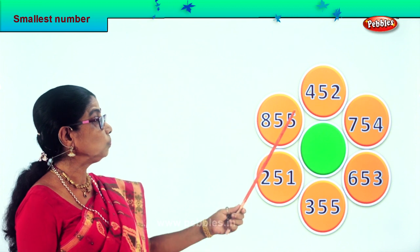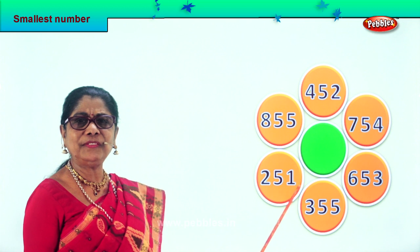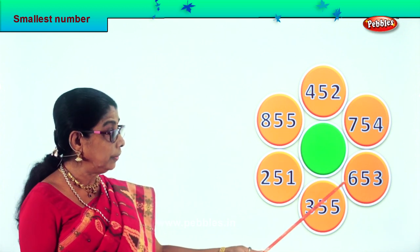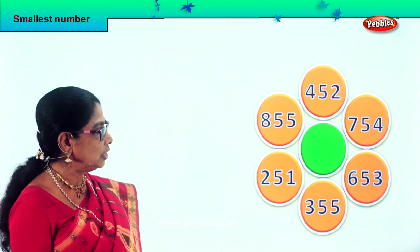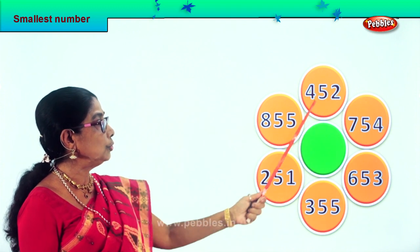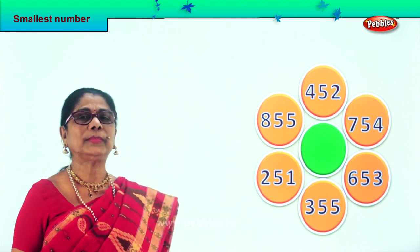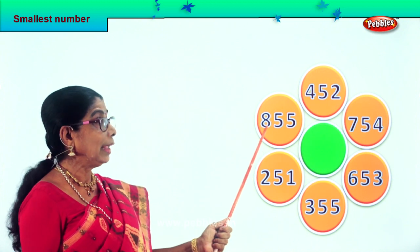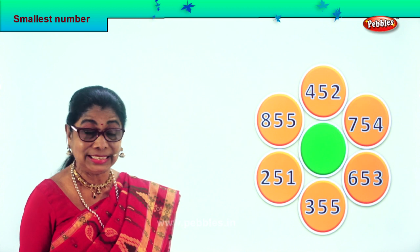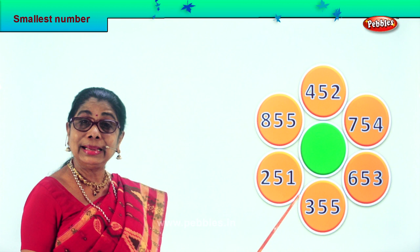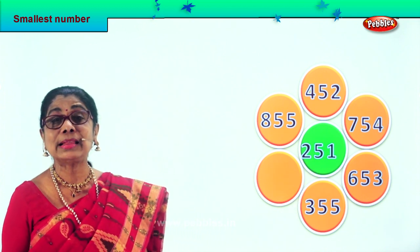Here we are — we need to say the numbers aloud: four hundred fifty-two, eight hundred fifty-five, two hundred fifty-one, three hundred fifty-five, six hundred fifty-three, and seven hundred fifty-four. Let's look at the tens place — all numbers have fifties. Let's look at the hundreds place: four hundred, eight hundred, two hundred, three hundred, six hundred, and seven hundred. In the hundreds place we have two here, so two hundred fifty-one is the smallest number among these. We take and put it in the middle.